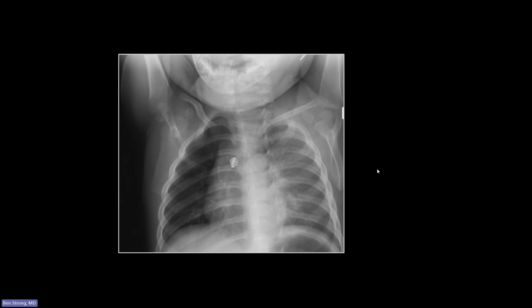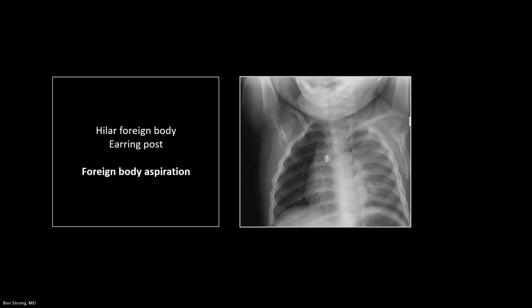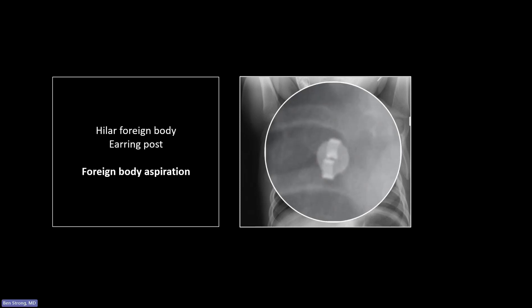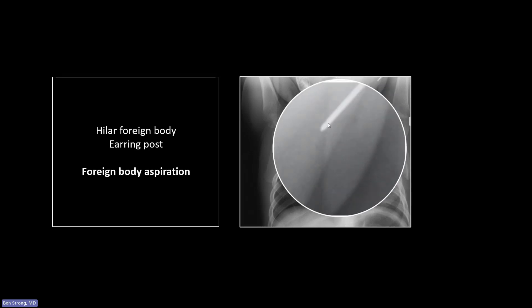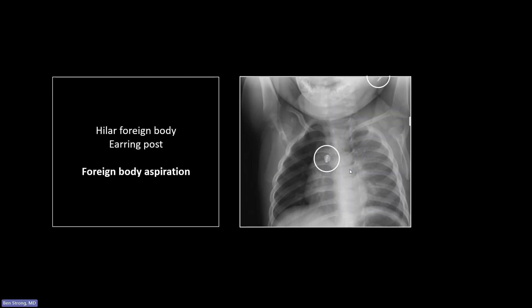This is an aspirated foreign body — this is an earring backing. You can see the difference in the posterior rib interspaces and the difference in lucency of the lungs, with a hyperlucent, hyper-expanded right lung. But there is that backing, and you can see the naked earring post still in the patient's ear.